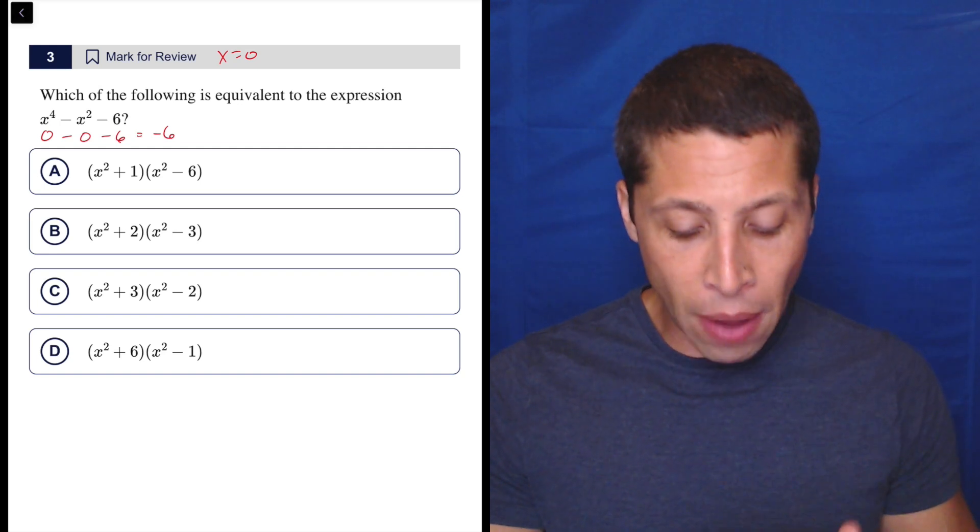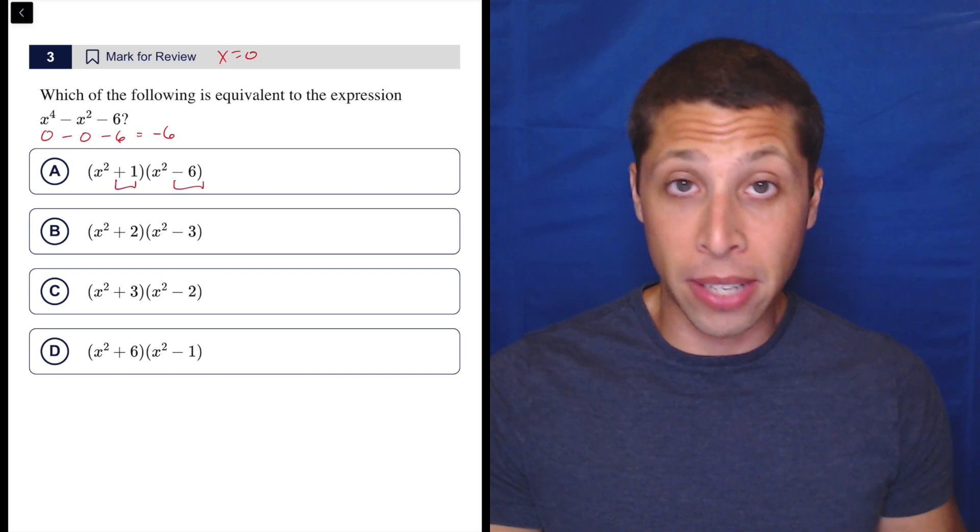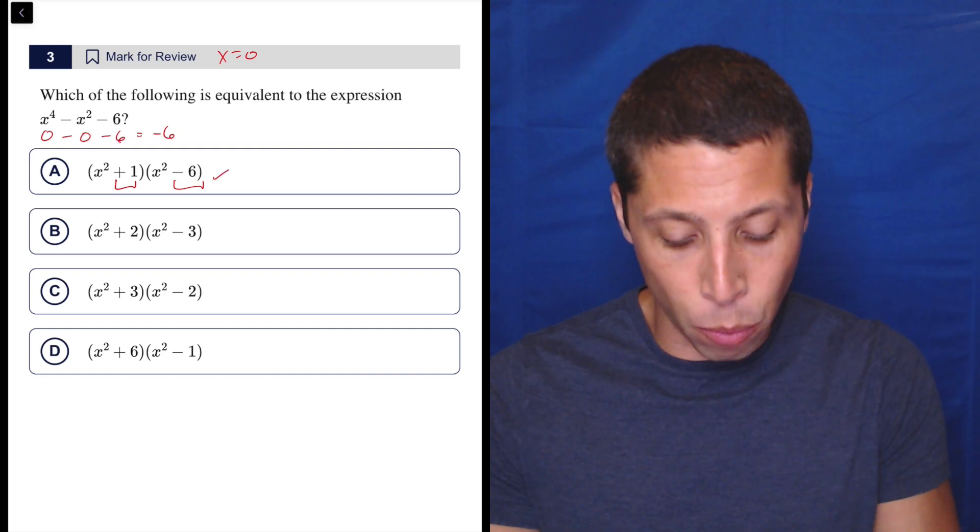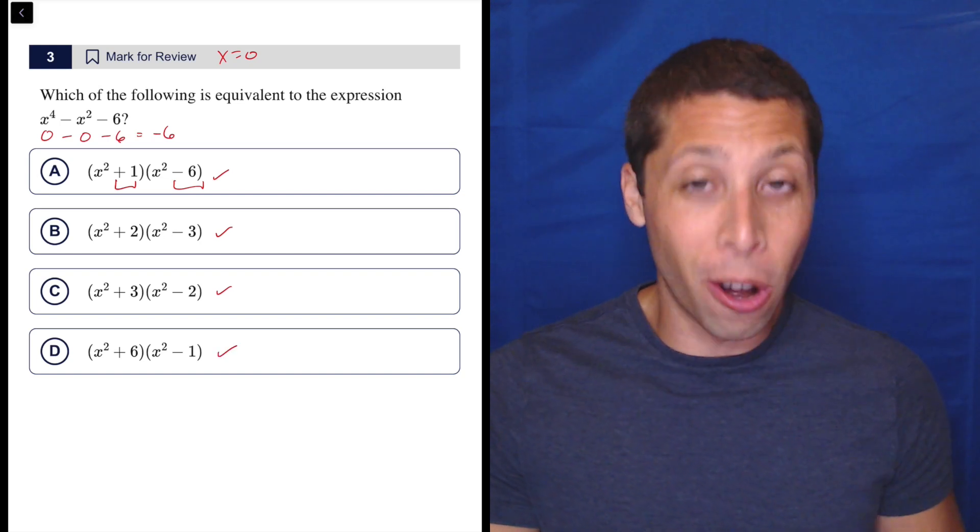But then as I go through the choices, if I put zero in for x squared, it basically means I'm going to multiply these two numbers together. So one times negative six is negative six. That works. Two times negative three, also negative six. Three times negative two, also negative six. Six times negative one, also negative six.